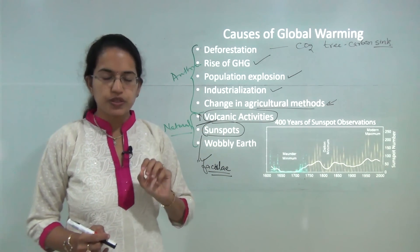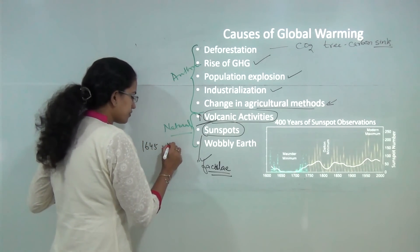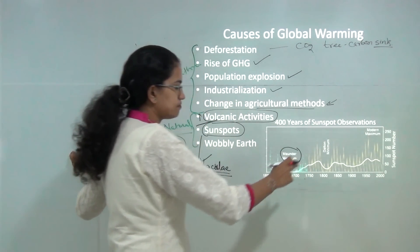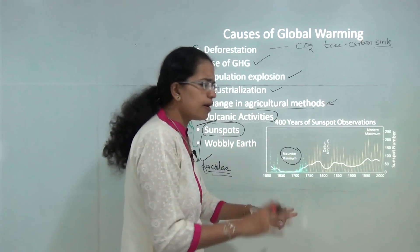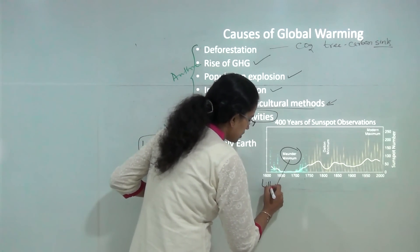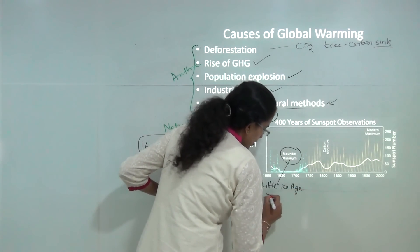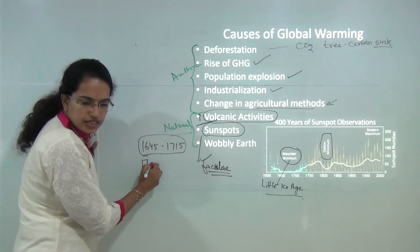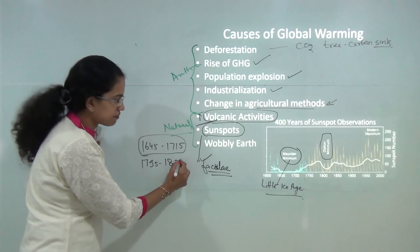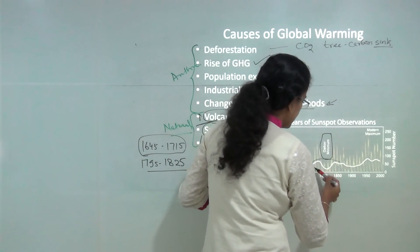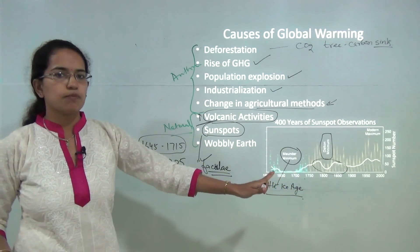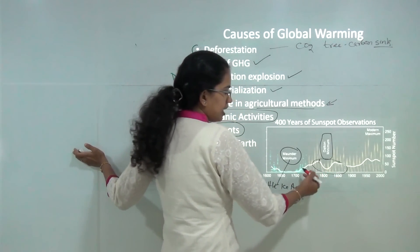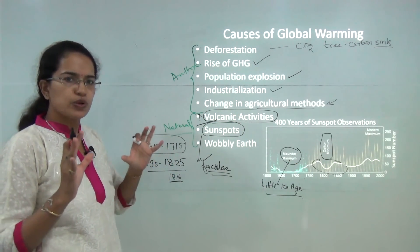During 1645 to 1715, known as the Maunder Minimum, there was minimum sunspot activity, and this period corresponded to the Little Ice Age. Similarly, the Dalton Minimum from 1795 to 1825 was a period of cooler temperatures, except for the Tambora volcanic eruption in 1816 which caused a temporary rise in temperature — but otherwise it was a generally cooler period.